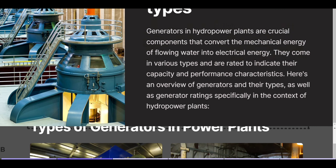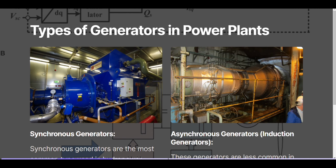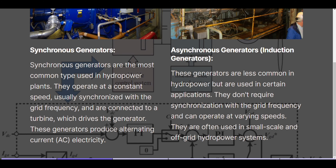Types of generators in power plants. Synchronous generators are the most common type used in hydropower plants. They operate at a constant speed, usually synchronized with the grid frequency, and are connected to a turbine which drives the generator. These generators produce alternating current electricity.